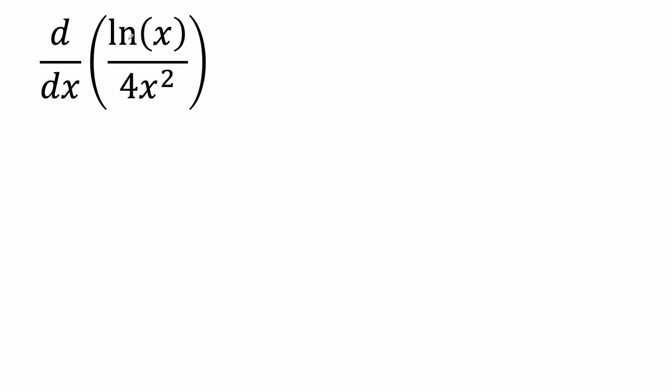So low d high minus high d low divided by the square of what's below. So low is our denominator, so we keep it. So 4x squared d high, so the derivative of our numerator. So I'm going to put d ln(x),